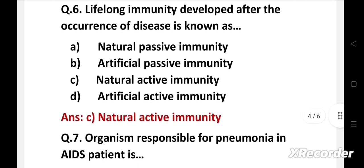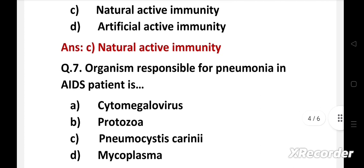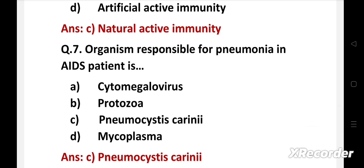Next question. Organism responsible for pneumonia in AIDS patient is: Option A Cytomegalovirus, B Protozoa, C Pneumocystis carinii, D Mycoplasma. Right answer is Option C, Pneumocystis carinii. Pneumocystis carinii is responsible for pneumonia in immunocompromised host.